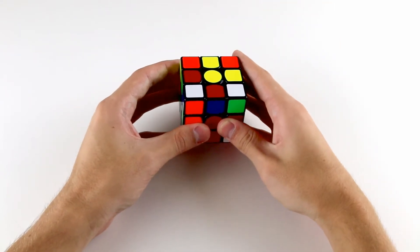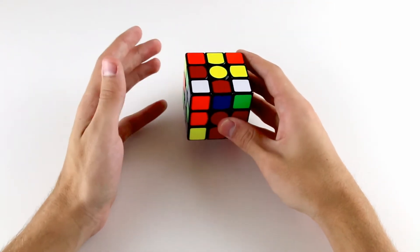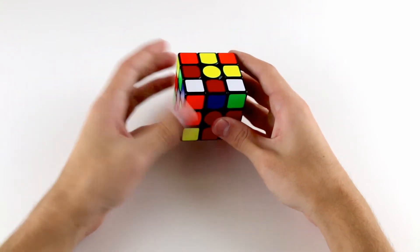In this case we're not going to be hiding the corner, but we're going to be hiding the edge into the middle layer. So I'll show you what to do now.